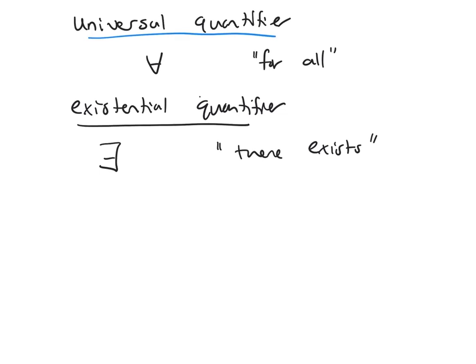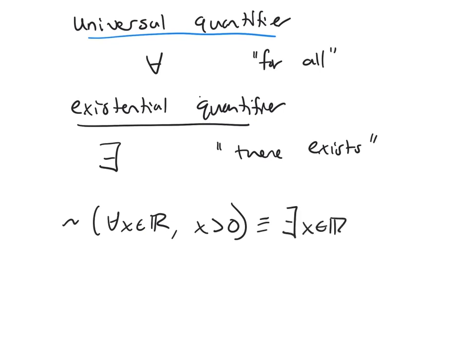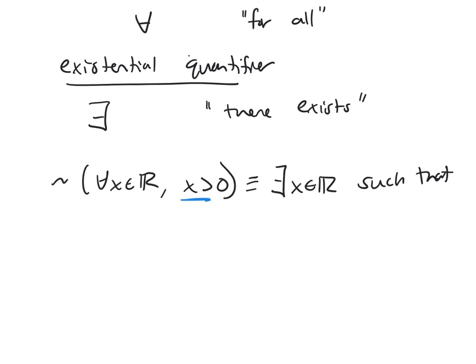Remember that when you negate these quantifiers, they flip to the other type. For example, if I negate a 'for all' statement, it becomes 'there exists an x in ℝ such that...' and then you negate the predicate — so 'x is greater than zero' would become 'x is less than or equal to zero.'